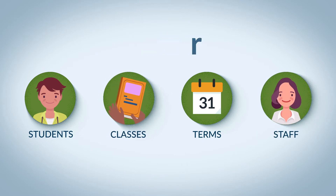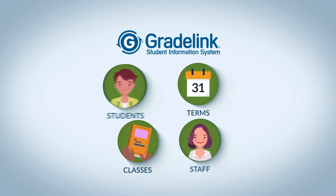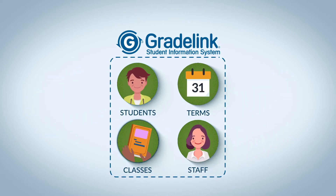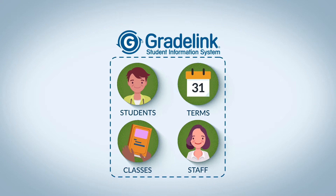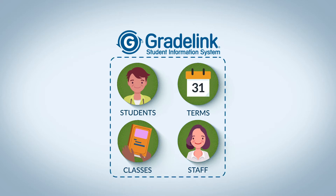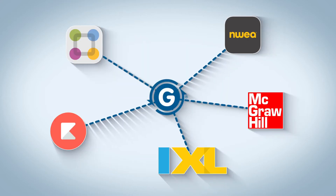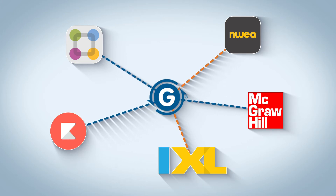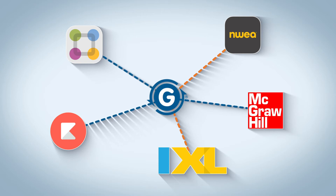For example, let's say you keep rosters in Gradelink. Gradelink houses all your students, the classes they're taking, the term that the class is in, and the teachers who teach those classes. But you also use other apps for assessment or communication at your school, and every time you make a change to the roster in Gradelink, you want it to reflect that change in these different apps.